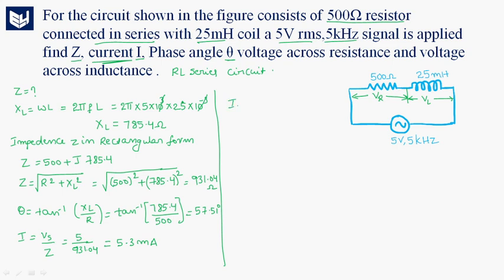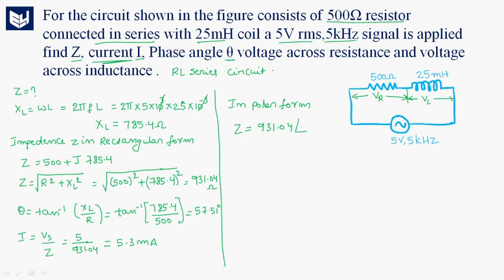In polar form, we represent Z as the magnitude at an angle theta. So Z equals 931.04 at an angle of 57.51 degrees. Now we have to find the voltage across resistance.